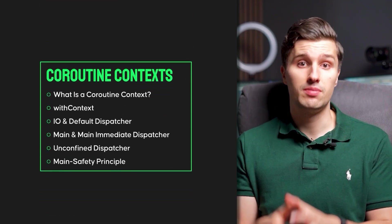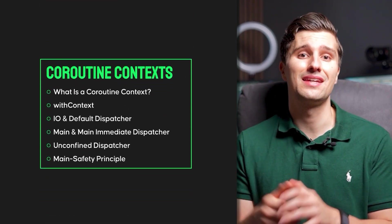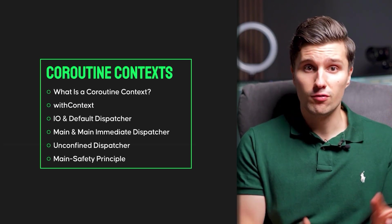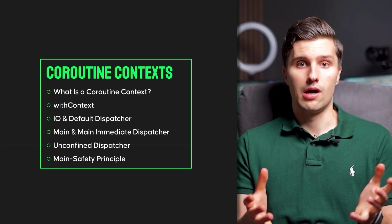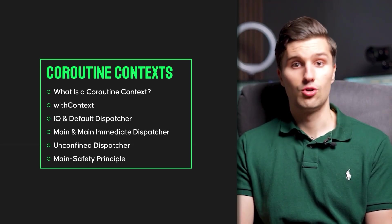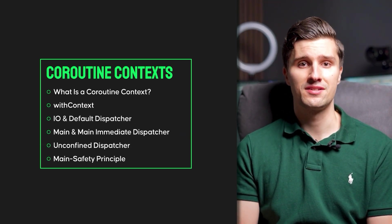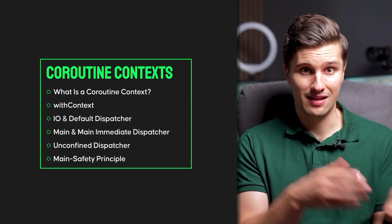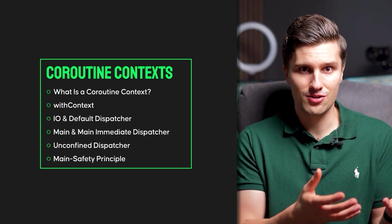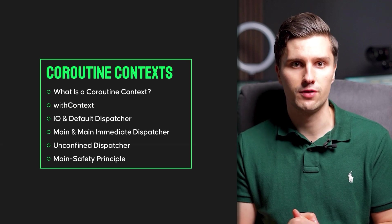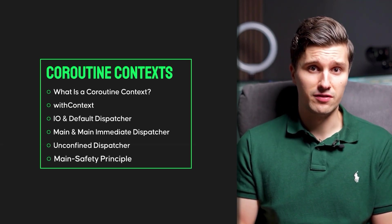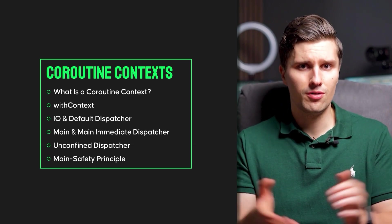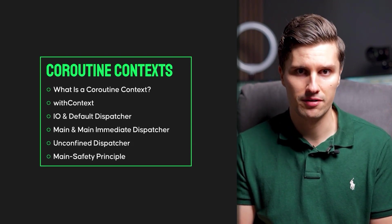We'll then dive much deeper into coroutine contexts in the next section. You'll learn what a coroutine context actually is, which different parts it consists of, how context inheritance works, all the different dispatchers available for coroutines, why specific dispatchers are better suited for certain tasks than others, how to use that knowledge to boost your app's performance, and the principle of main safety — a best practice for converting blocking code to suspending code so you don't accidentally block your UI thread.